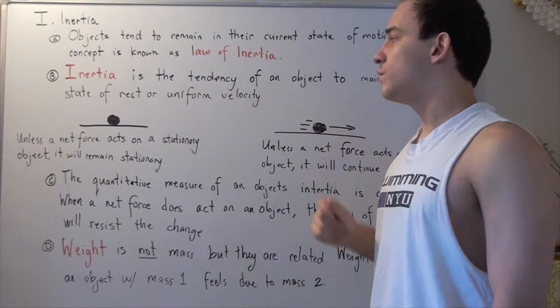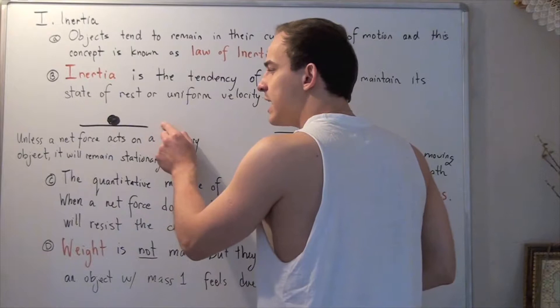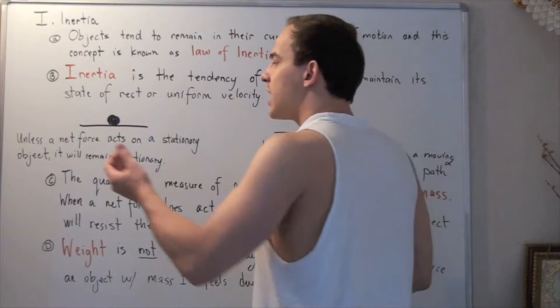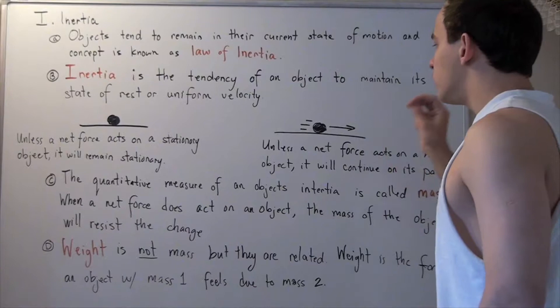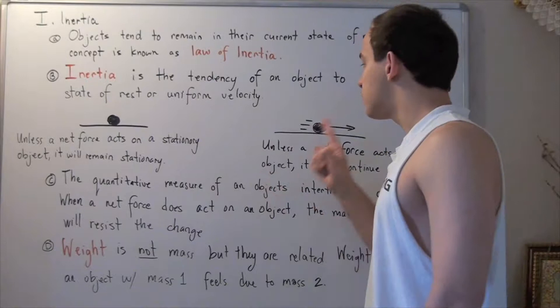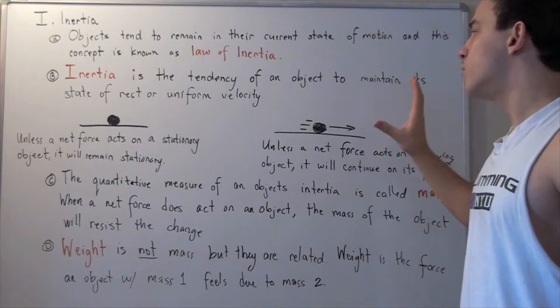So, if we have a stationary ball on a frictionless table, that ball will remain stationary unless a net force acts on it. Likewise, if our ball is moving with uniform velocity along a frictionless table, unless a net force acts on this ball in the opposite direction of motion, this ball will continue to move along its path.